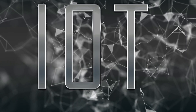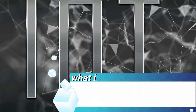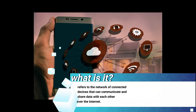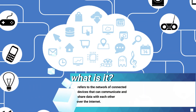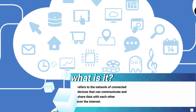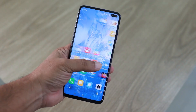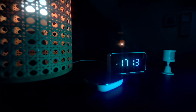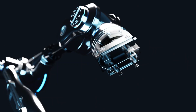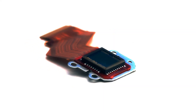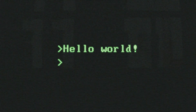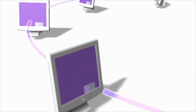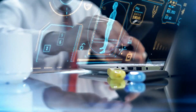What is IoT? At its core, the Internet of Things, or IoT, refers to the network of connected devices that can communicate and share data with each other over the Internet. These devices range from everyday objects like smartphones and smart home gadgets to more complex systems like industrial machinery. The key idea is that these devices are embedded with sensors, software, and technologies that allow them to collect and exchange data, creating an interconnected web of devices capable of automating processes, optimizing operations, and providing real-time insights.